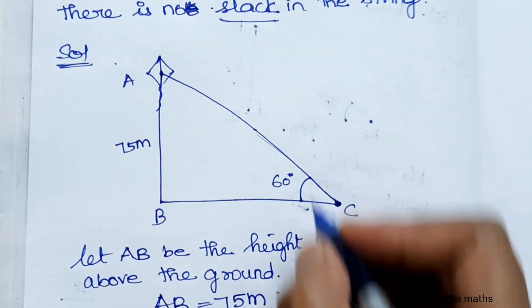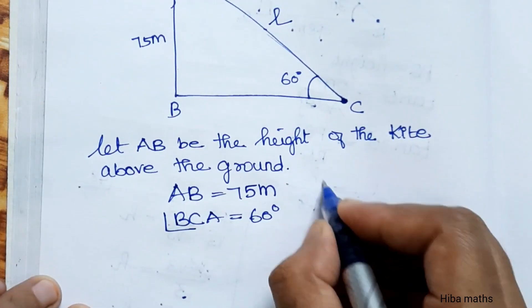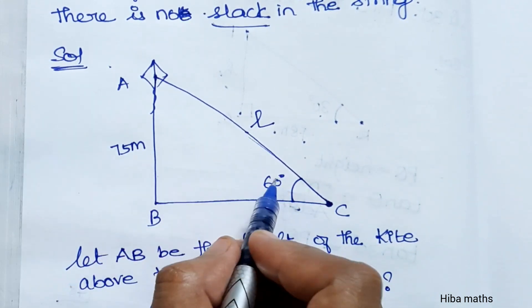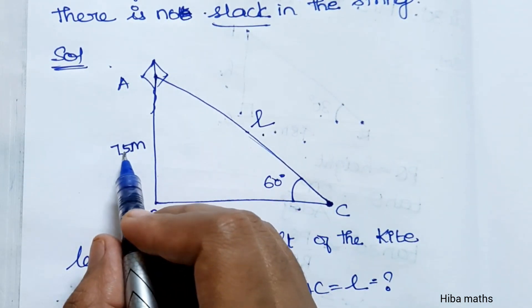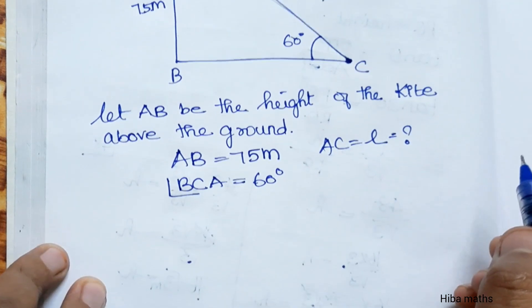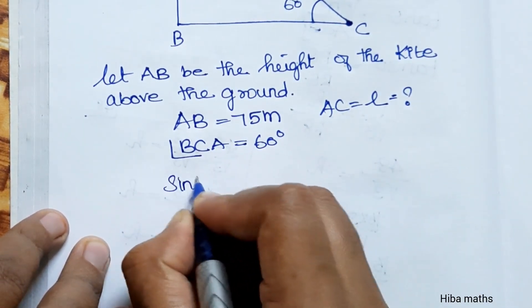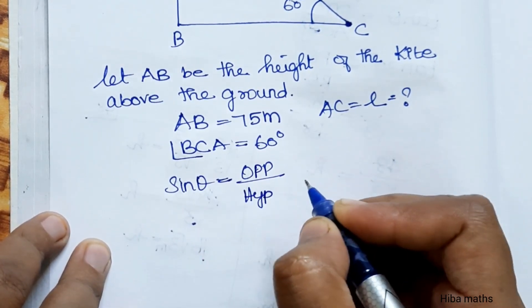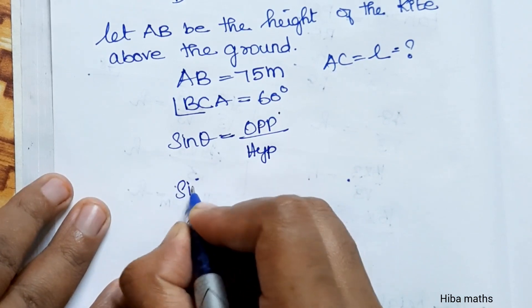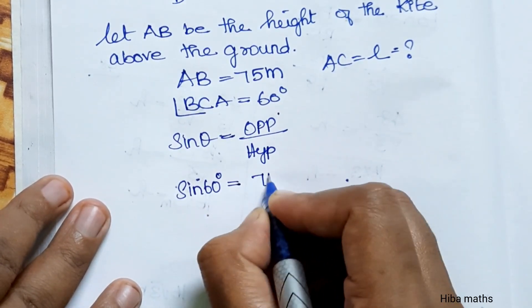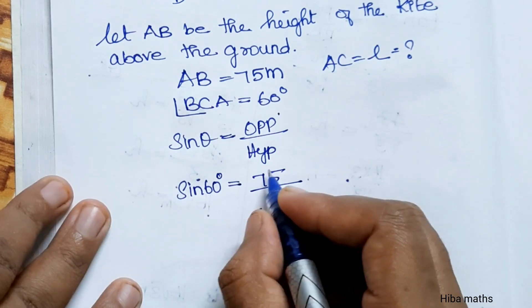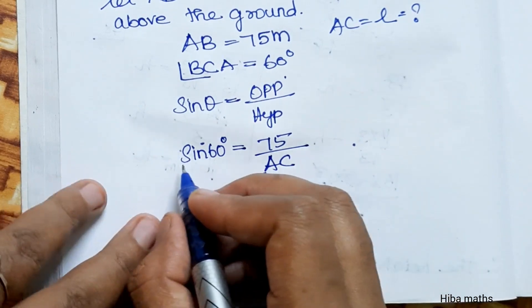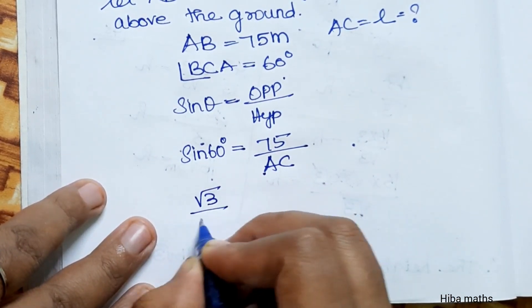We assume the length of the string AC is equal to L. Now, sin theta equals opposite over hypotenuse, so sin 60 degrees is equal to the opposite side, 75, divided by the hypotenuse L.